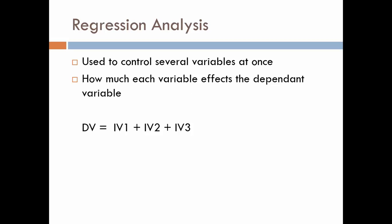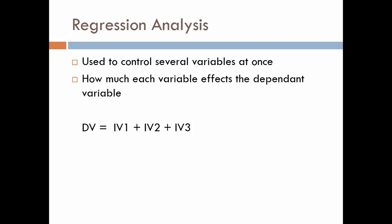Another way to do a multivariate analysis is a regression. This is when we put in several variables at one time to control for them. We can determine how much each of these variables affects our dependent variable. If you remember from your statistics class, the formula is: dependent variable equals the first independent variable plus the second independent variable plus the third independent variable — showing how much each of those predicts the outcome. When we're creating our analysis plan and we want to know about cause and effect, a regression analysis is what we usually run.